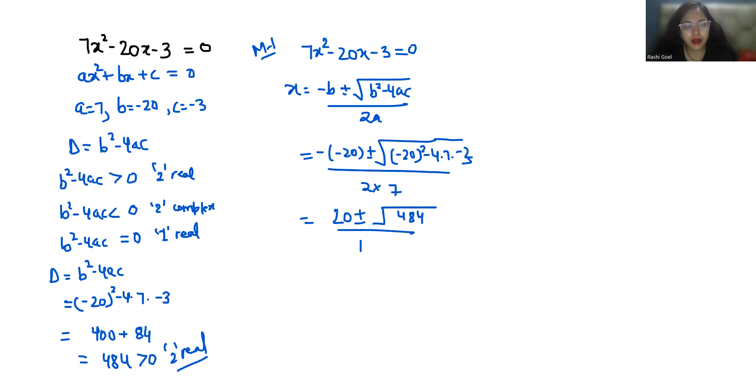20 plus minus, square root of 484 is 22, divided by 14. So x1 is 20 plus 22 by 14.